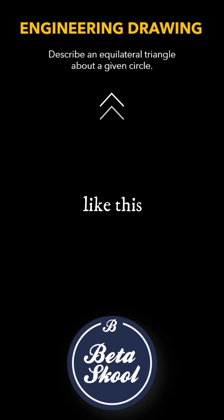The question reads like this: Describe an equilateral triangle about a given circle. Since the radius of the circle is not given, you can assume a suitable radius. Let's assume a radius of 30 mm.